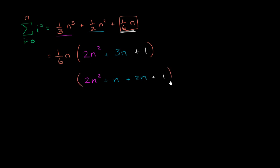So if I rewrite this as 2n squared plus 2n plus 1, this part we can factor out an n. So this is going to be equal to one-sixth n. So if we factor out an n, we would have n times 2n plus 1. That's this part right over here. And then I could write this as plus 1 times 2n plus 1.